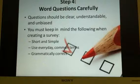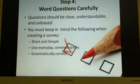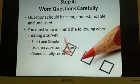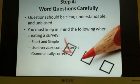Step four: word your questions carefully. Questions should be clear, understandable, and unbiased. You must keep in mind the following when creating a survey: keep it short and simple, use everyday common terms that all of your audience will understand, and use grammatically correct language. Make sure that everybody who is reading it can understand. Also, if some of your participants are not English speakers, make sure it is available in their native language.